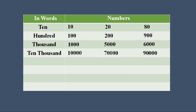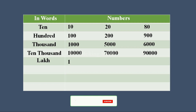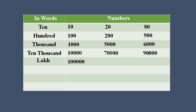Next, we are going to see about lakh. Lakh means there should be 5 zeros. For one lakh, first write 1 then write 5 digits of zero — it becomes one lakh. If someone asks you to write 3 lakh, write 3 then write 5 digits of zero. If someone asks you to write 6 lakh, write 6 then write 5 digits of zero — it becomes 6 lakh.